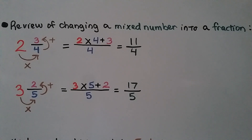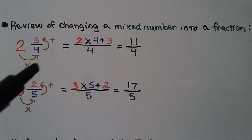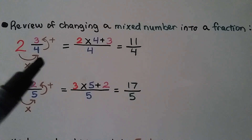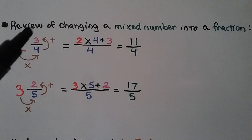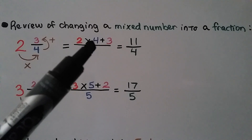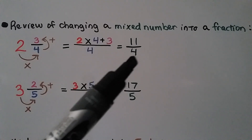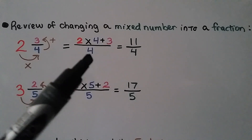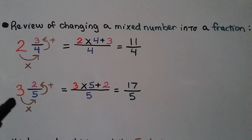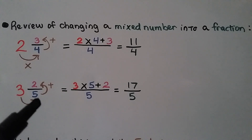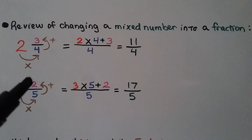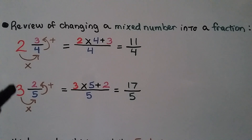Let's review this quickly again. We have 2 and 3 fourths — we want to change it into a fraction greater than 1. We multiply the whole number to the denominator: 2 times 4 is 8. We add the numerator 3: 2 times 4 is 8, plus 3 is 11. We get 11 fourths, because we write it over that same denominator. Here we have 3 and 2 fifths: 3 times 5 is 15, plus 2 more is 17. We get 17 fifths. We're going counter-clockwise — multiply to the denominator, then add the numerator.